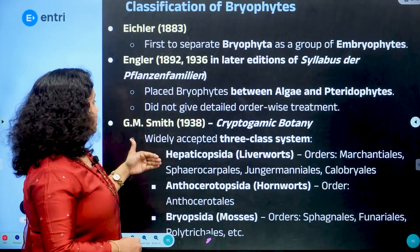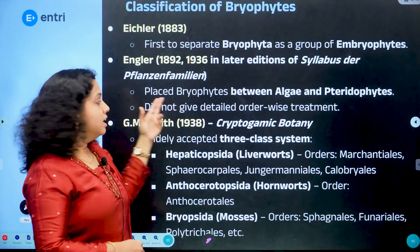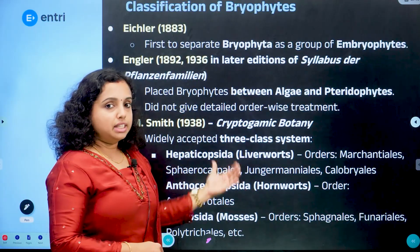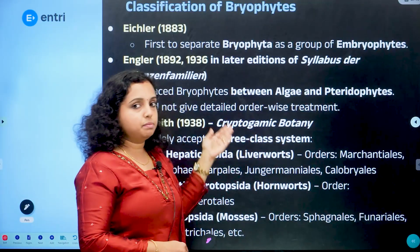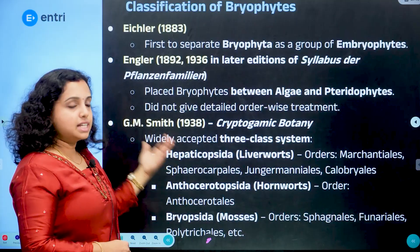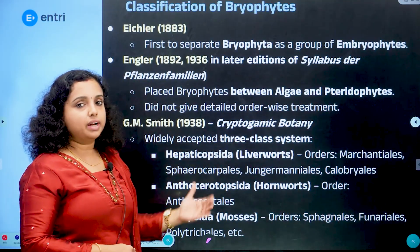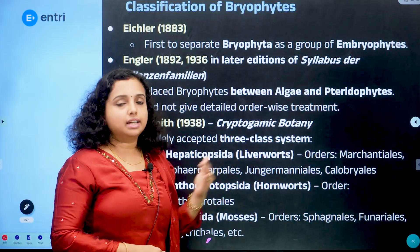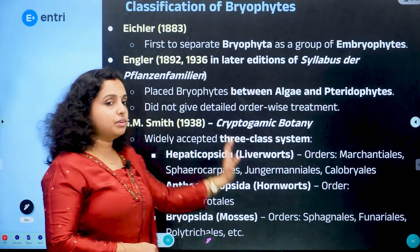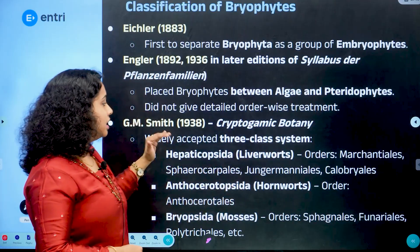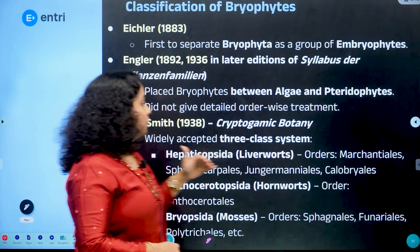The next scientist is G.M. Smith. He published a book called Cryptogamic Botany. He proposed a three-class system. The three classes are: the most primitive class, Hepaticopsida, which includes the liverworts.